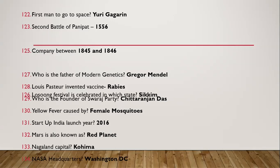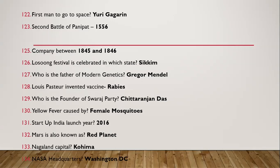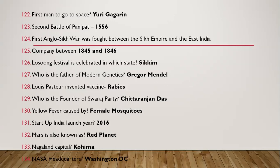Question 121: First man to go to space is Yuri Gagarin. Question 122: Second Battle of Panipat — it was in 1556.